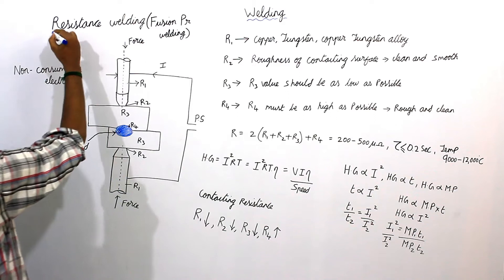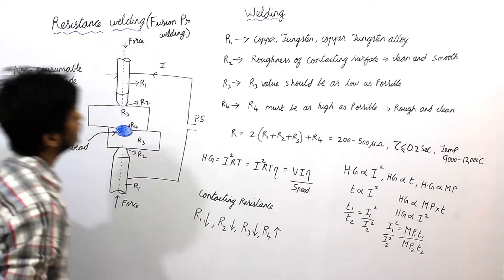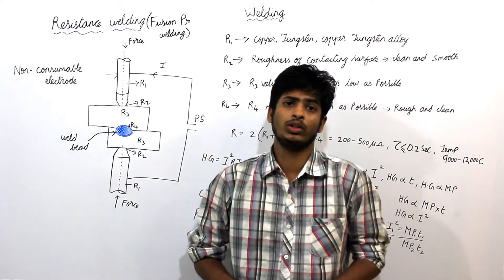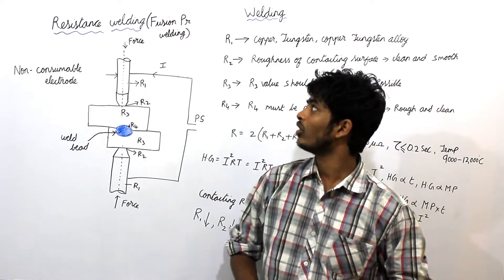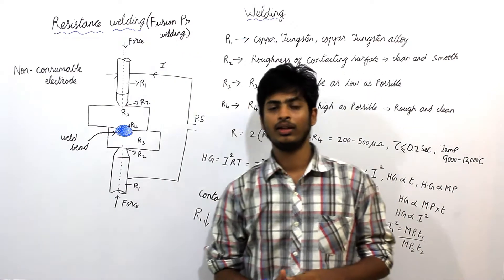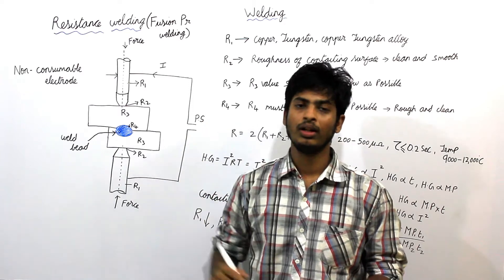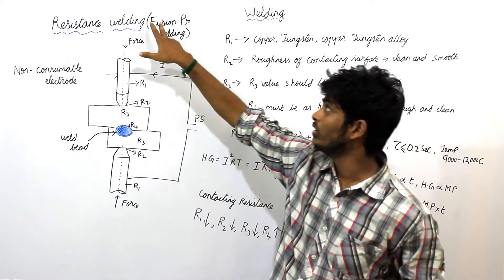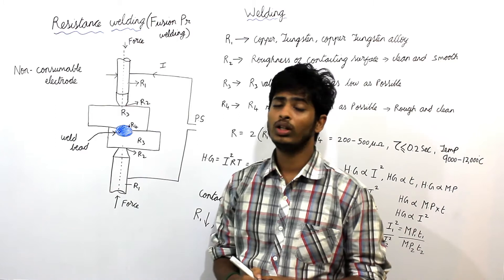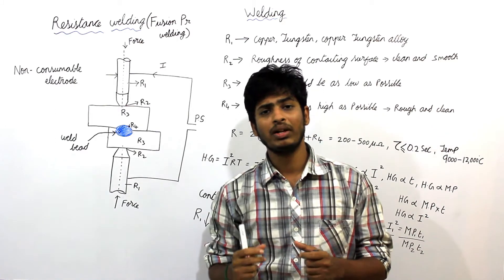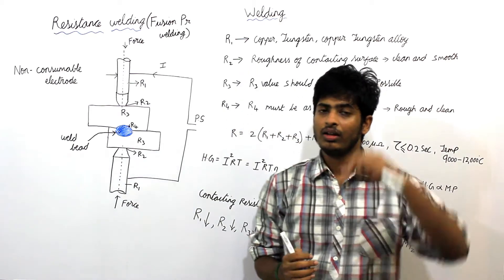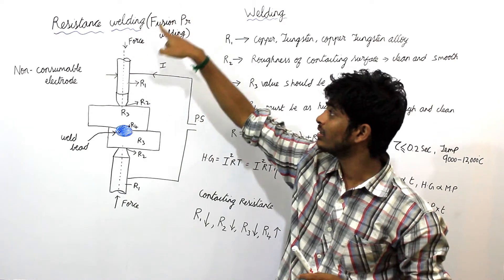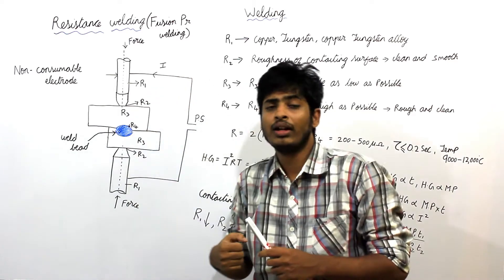Under welding process, the next topic is resistance welding. The heat required for melting and joining the plates is obtained from an electrical resistance circuit — this is called resistance welding. Resistance welding is also called fusion pressure welding process. Fusion welding means the parent metal is melted and welded by application of heat. Pressure welding is when force is applied for welding.